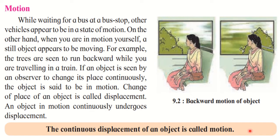When the object is in motion, it continuously undergoes displacement. Using this word displacement, we can define motion: the continuous displacement of an object is called motion. So the first definition is: change of place of an object is called displacement. The second definition is: continuous displacement of an object is called motion.